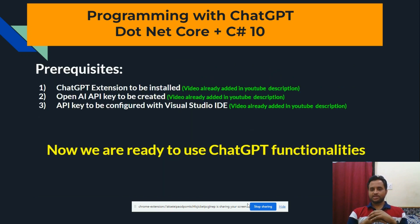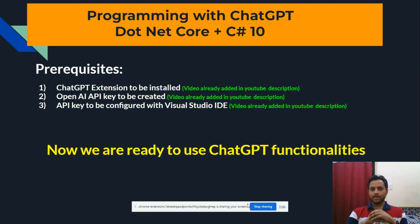These are just the prerequisites required to write the unit test. First of all, we must have the ChatGPT extension installed with our Visual Studio IDE. I already have created a video for that, which I will add in the video description. Another one is the OpenAI key — again, an API key to be configured with Visual Studio. Both links will already be there in the description, so please go and check out that video for these prerequisites.